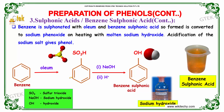Benzene is sulfonated with oleum, and the benzene sulfonic acid so formed is converted to sodium phenoxide on heating with molten sodium hydroxide. Acidification of the sodium salt gives phenol. Taking benzene as an example: when sulfonated with oleum it produces benzene sulfonic acid, which on reaction with sodium hydroxide followed by acidification gives phenol.